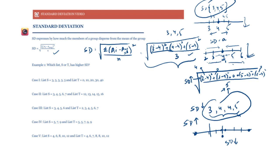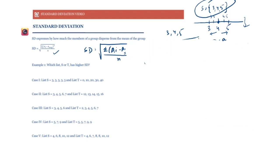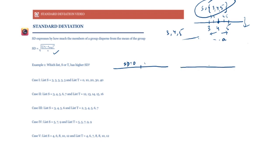GMAT will only ask questions where it's quite obvious whether SD will increase or decrease. For example, list S = {3,3,3,3,3,3}: the mean is 3 and the SD is 0 because there's no dispersion — all elements are at the mean itself. For list T = {0, 10, 20, 30, 40}, the mean is 20 and the elements are dispersed, so SD will be some positive value — higher than that of S.